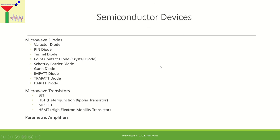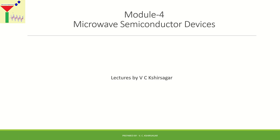Good morning and welcome back to the course of microengineering. Today we are going to discuss the further part of the transistor which we left in our previous lecture. In our previous lecture we started studying semiconductor devices beginning with the transistor — specifically the metal semiconductor field effect transistor, then the current-controlled bipolar junction transistor, and a special type called the heterojunction bipolar transistor.